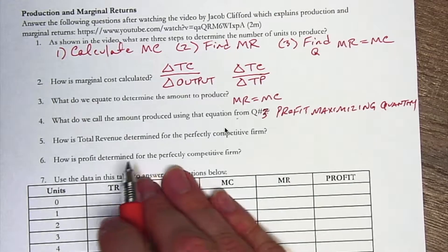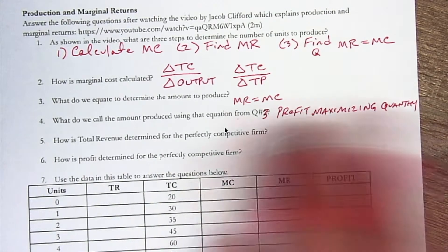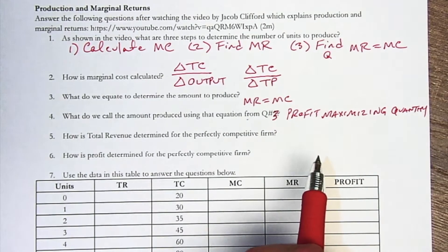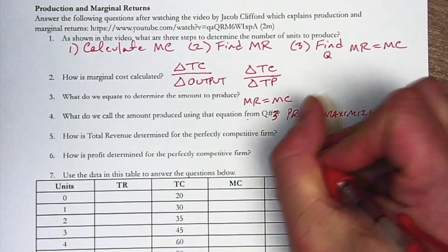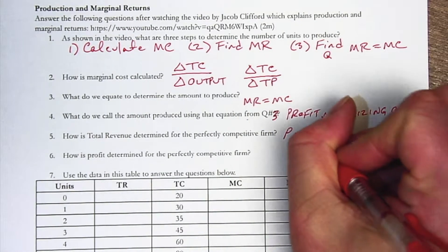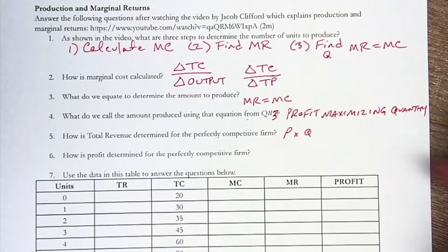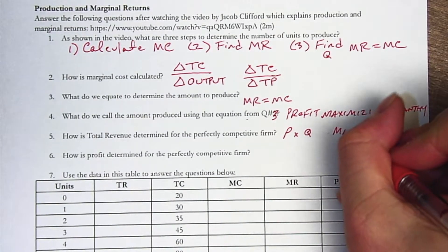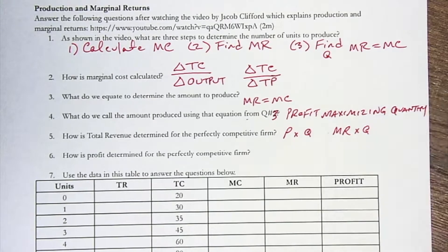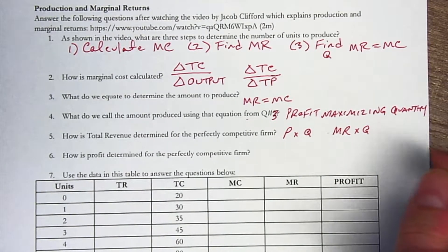And how is total revenue then determined for a perfectly competitive firm? For this firm, total revenue is your price times your quantity. You could also say it's the marginal revenue times the quantity, since we know that price and marginal revenue are the same thing.